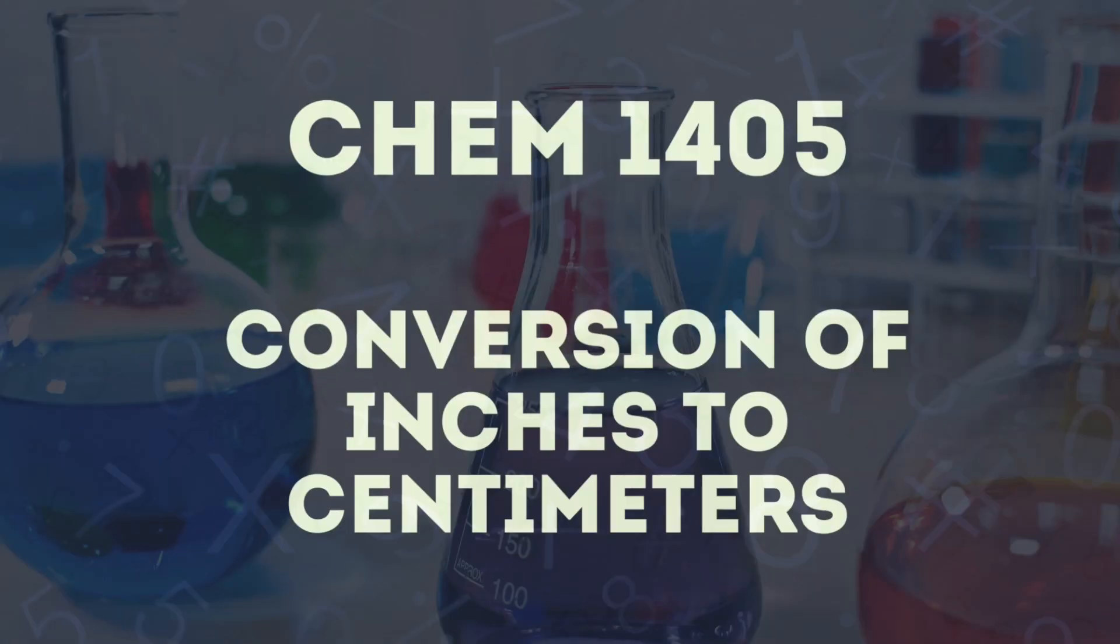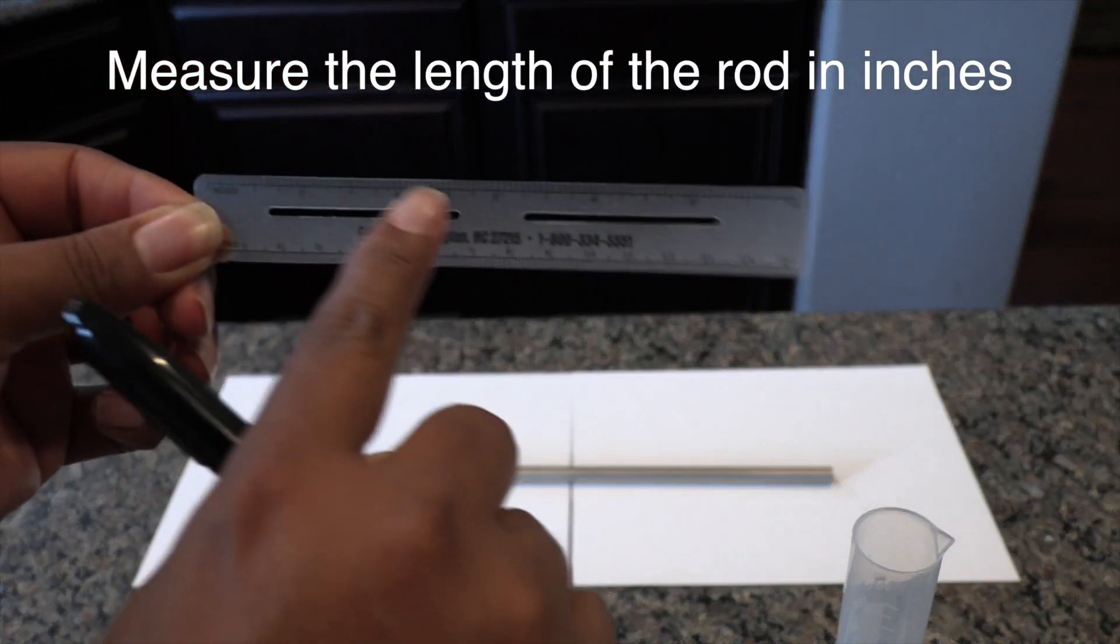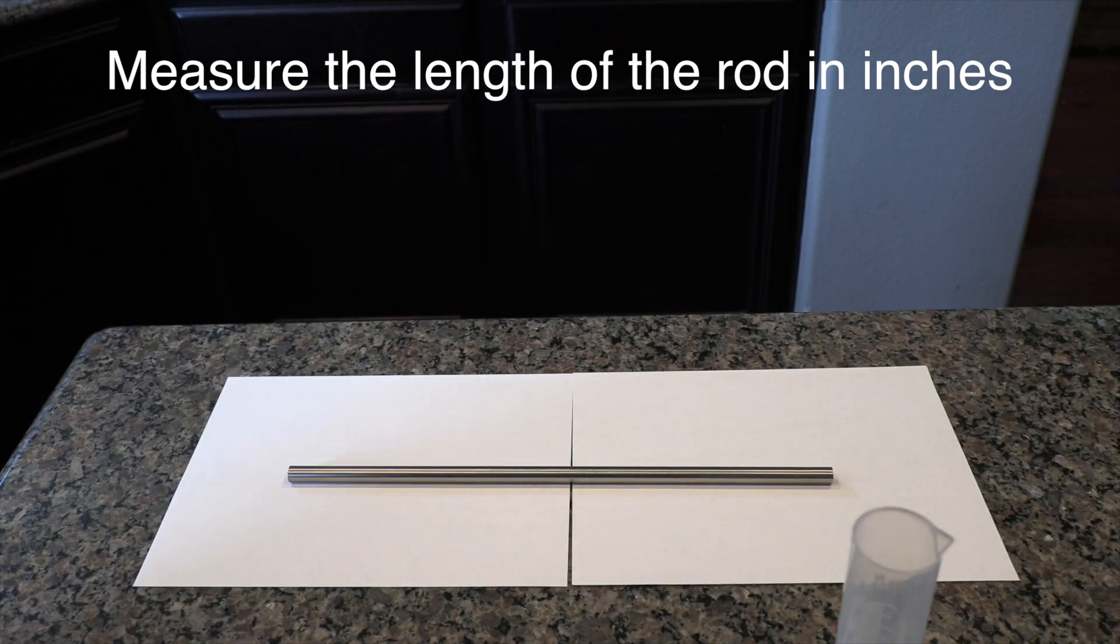Conversion of inches to centimeters. The equipment that you will need is a ruler graduated in inches and centimeters and a rod of some definite length. Place the rod on a flat surface, measure its length in inches and record the length.